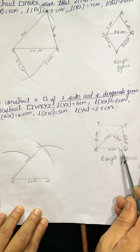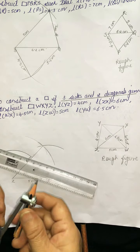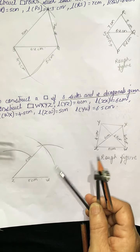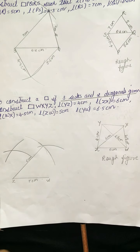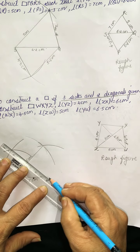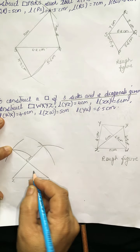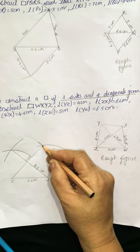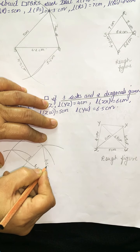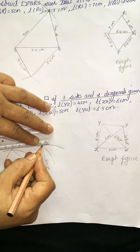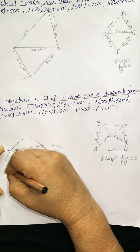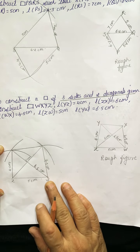Another diagonal YW is 6.5 cm, so take 6.5 cm. Draw that arc here. Now join this here — this is 6.5. Now we have to join the segment for WX = 4.5 cm. Join this here, both arcs cutting. And again join ZY here — this is 4 cm. This is the required quadrilateral.